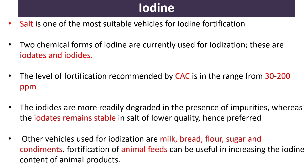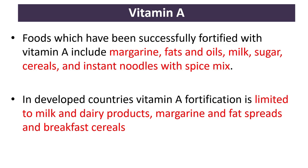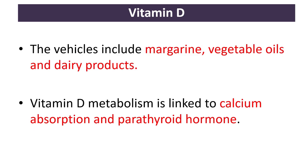Other vehicles used for iodization include milk, bread, flour, sugar, and condiments. The fortification of animal feeds can be useful in increasing the iodine content of animal products. Foods successfully fortified with vitamin A include margarine, fats and oils, milk, sugar, cereals, and instant noodles with spice mix. In developed countries, vitamin A fortification is limited to milk and dairy products, margarine, fat spreads, and breakfast cereals.